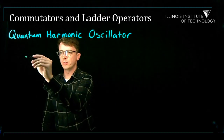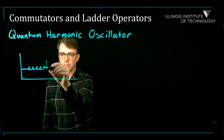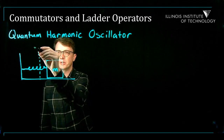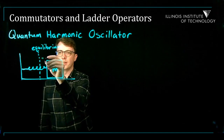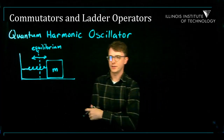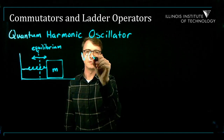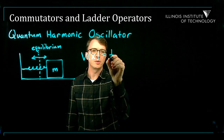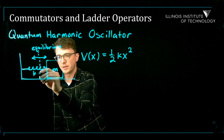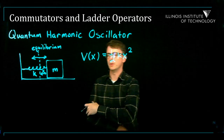The quantum harmonic oscillator — we know what a classical harmonic oscillator is: it's a mass attached to a spring with spring constant k, oscillating back and forth around the equilibrium position. The potential energy of the oscillator V(x) is one-half kx squared — the elastic potential energy — where x is the distance the oscillator has been stretched from its equilibrium position.